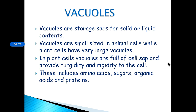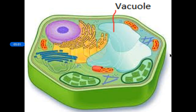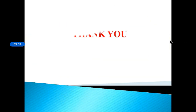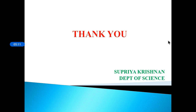This is all about vacuoles. Here is a picture of a vacuole in a plant cell. We have almost completed the portion on the fundamental unit of life covering mitochondria, plastids, and vacuoles. The remaining topics will be discussed later. Take care and bye.